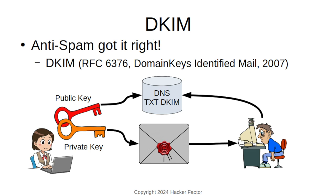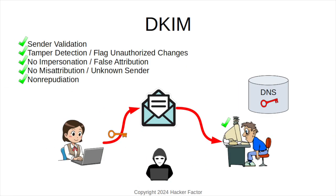The idea is simple. The sender has a public and private key pair. The private key signs the email, while the public key is stored in DNS. The recipient compares the email's signature against the public key in DNS. This approach validates the sender and prevents unauthorized changes because the signature won't match.